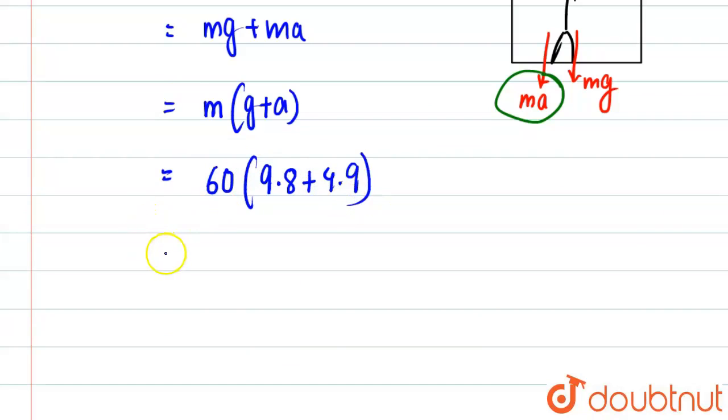And g we'll take as 9.8 plus 4.9. If we add it, we get 14.7. So 14.7 times 60 comes out to be 882 newtons.